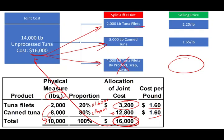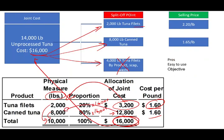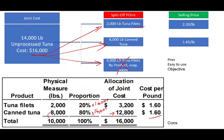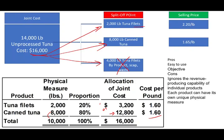What we did is use size as the allocation factor. The cost per pound of $1.60 comes from $3,200 ÷ 2,000 and $12,800 ÷ 8,000. The pros of this method: it's easy to use and straightforward — we simply use weight. The cons: this method ignores the revenue-producing capability. The tuna fillet consumes only 2,000 pounds but generates higher revenue per pound than canned tuna. Also, each product may have its own unique physical measure, so just because a product is physically larger doesn't mean it should absorb more cost.